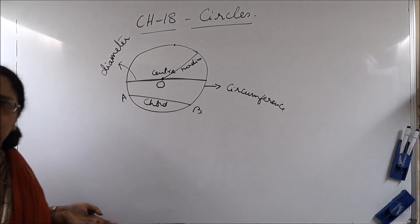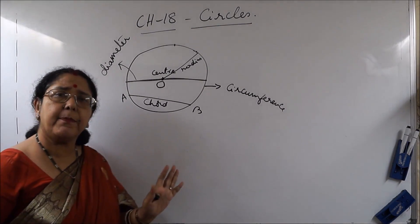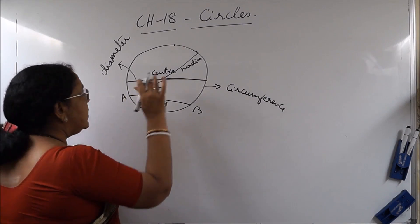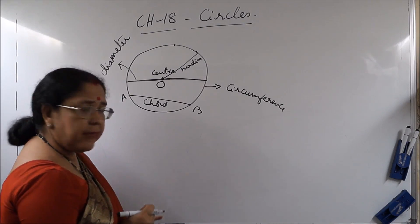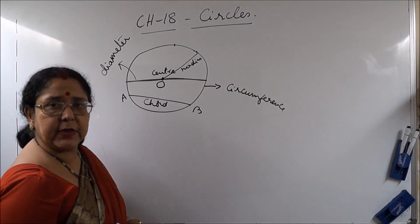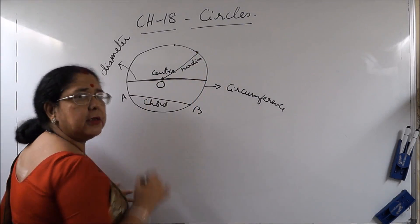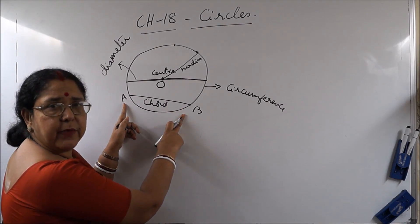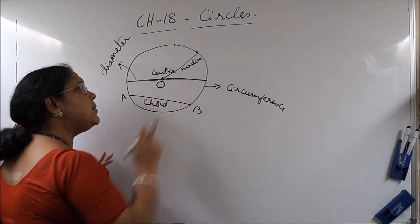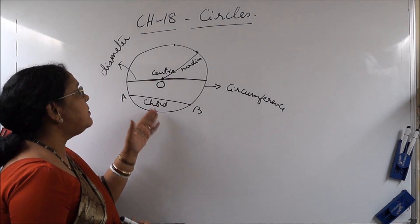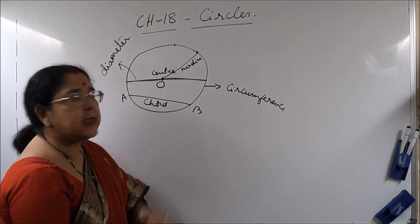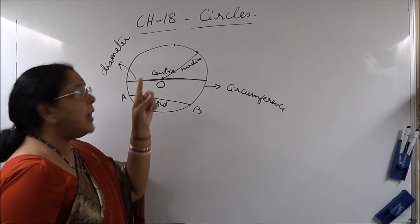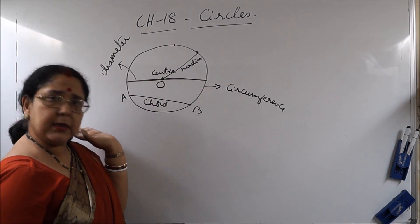All these things are already known to you — you have been learning them from smaller classes. Just to brush up, we have revised again. Now, a chord is a line joining any two points on the circumference of the circle. When a chord passes through the center of the circle, it is called the diameter. Chord AB here is not passing through the center, so it cannot be the diameter. The diameter is the biggest chord in a circle.